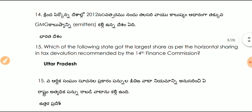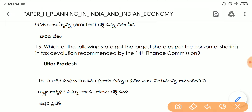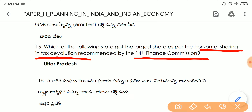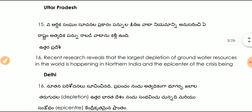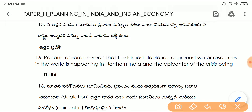Question number fifteen: which state got the largest share as per the horizontal sharing in tax devolution recommended by the 14th Finance Commission? Answer is Uttar Pradesh.